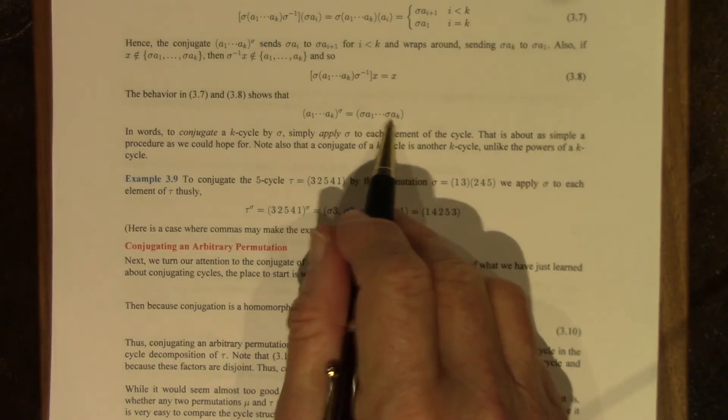Note also that, unlike the case for powers, a conjugate of a k cycle is another k cycle, because these will all be distinct.